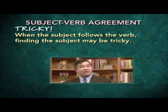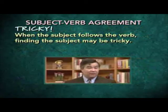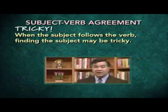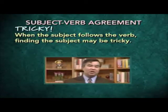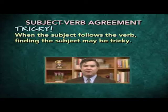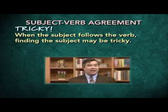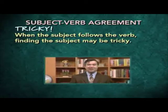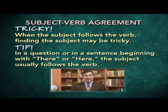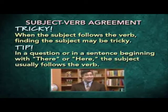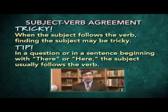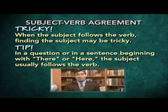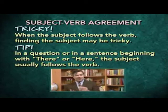In addition, when the subject follows the verb, finding the subject may be tricky. In the great majority of English sentences, the subject comes before the verb. But occasionally that's not true. Here's a tip: in a question or in a sentence beginning with 'there' or 'here,' the subject usually follows the verb. So when you're dealing with a sentence which poses a question or which begins with 'there' or 'here,' look after the verb to find the true subject.